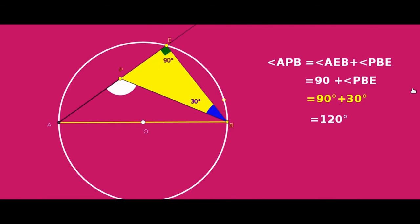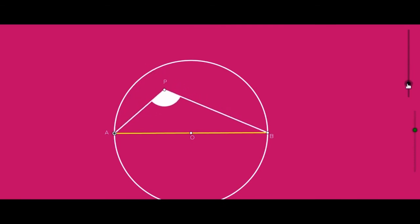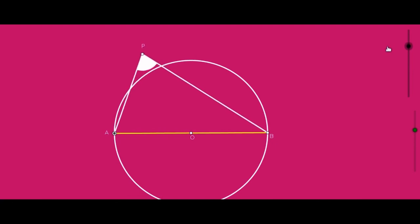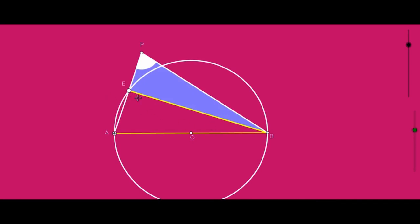If P is a point inside the circle, then the angle made by P with the end points of the diameter is always greater than 90 degrees.